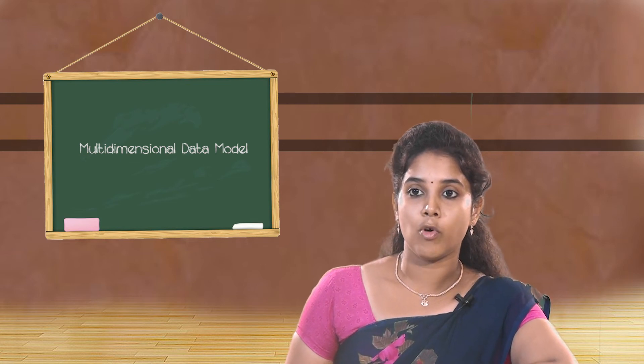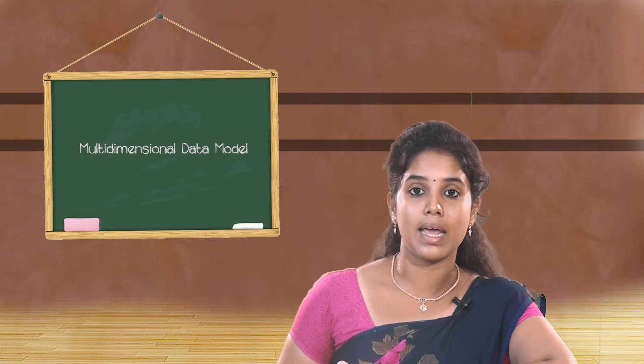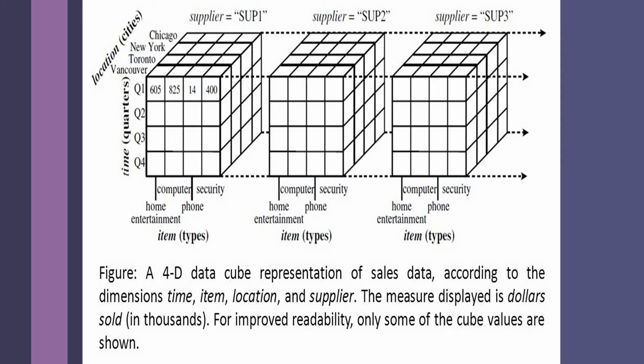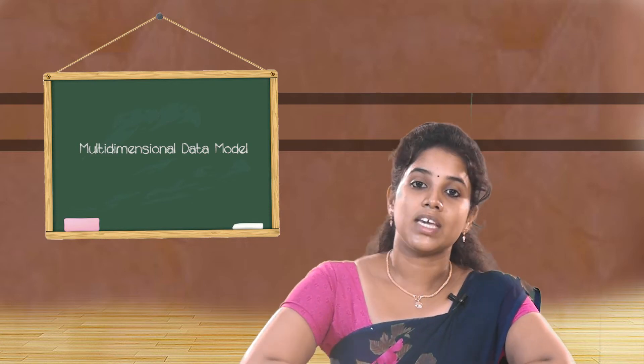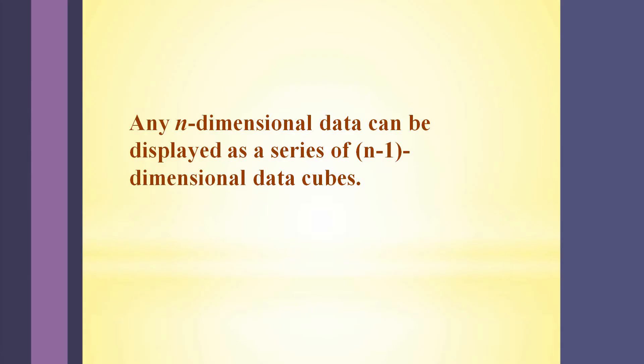Now let us move on to four-dimensional data. This four-dimensional data can be viewed as a series of three-dimensional data cubes. We are considering the same previous example, but here a fourth dimension is introduced: the dimension supplier, which consists of three types — supplier one, supplier two, and supplier three. On the screen, you can see how a four-dimensional data cube is displayed as a series of three-dimensional data cubes. Hence, any n-dimensional data can be displayed as a series of n-1 dimensional data cubes.